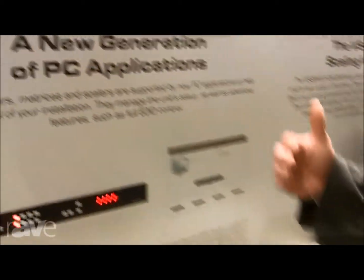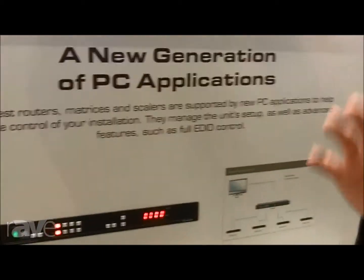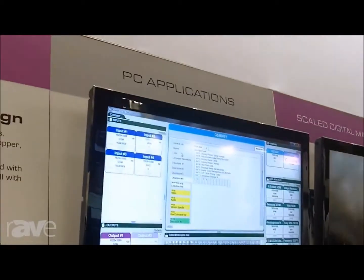Every display device in the world has a particular set of parameters that will describe what the best possible signal to send to it is, and they will communicate with a source device through EDID to tell that source device to send that best possible signal. So in this world of digital, it's important to be able to interact with and understand that EDID.